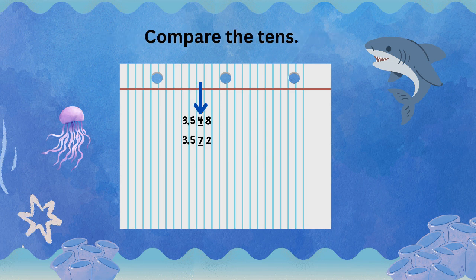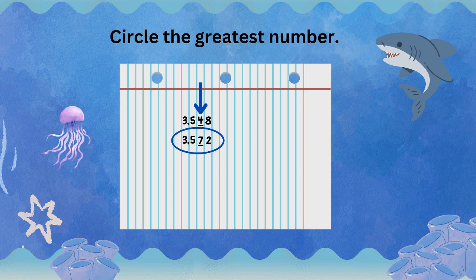As we look at the tens place, we notice that we have a four in the first number and a seven in the second number. When we compare those, we know that seven is greater than four. So that means that 3,572 is the greatest number. I always like to circle the greatest number and here's why.